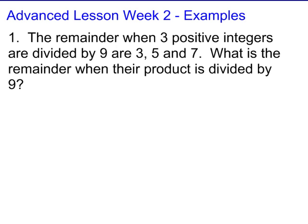Okay, so in these examples for Advanced Lesson Week 2, we apply what we learned in the first video. And what we do is we ask a question. The remainder when three positive integers are divided by 9, so this is what we're dividing by. We don't know what our integers are, but we know that they give remainder 3, remainder 5, and remainder 7.